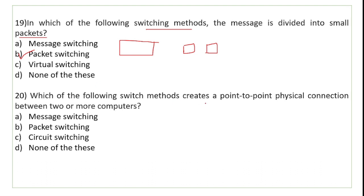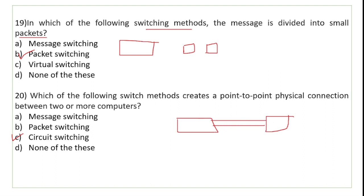Which switching method creates a point-to-point physical connection between two or more computers? Jahan sender aur receiver ke beech mein point-to-point connection create kar diya jaata hai message send karne se pehle — yeh hai circuit switching. Jo link banaya jaata hai use circuit kaha jaata hai. Message transmit karne se pehle sender aur receiver ke beech direct connection create kiya jaata hai, isliye ise circuit switching kehte hain.